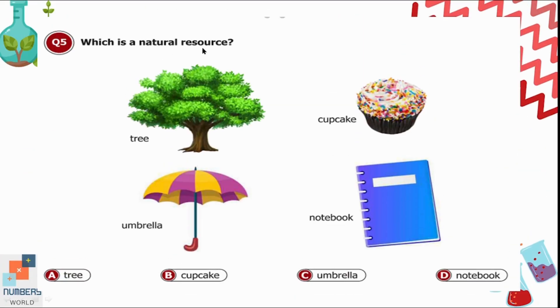Question 5: Which is a natural resource — tree, cupcake, umbrella, or notebook? The tree is the natural resource out of all these four pictures.